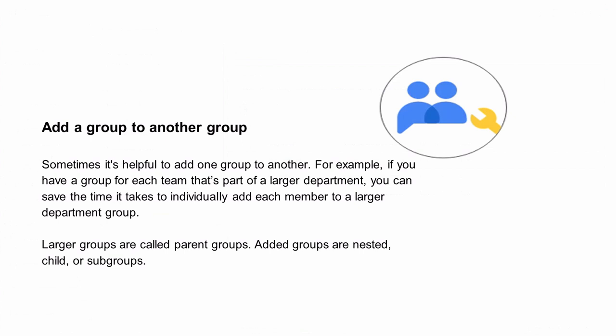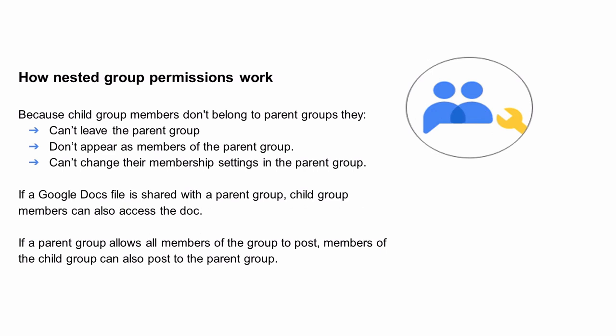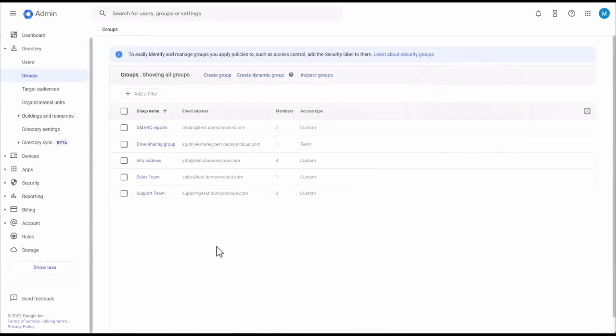Sometimes it's helpful to add one group to another. For example, if you have a group for each team that's part of a larger department, you can save the time it takes to individually add each member to a larger department group. Larger groups are called parent groups; added groups are nested, child, or subgroups. You might nest groups to have messages posted to the parent group also posted to the child, if the child's posting permissions allow it. You can also change members of the parent group by editing the child — this works if multiple parent groups contain the same child group. Because child group members don't belong to parent groups, they can't leave the parent group, don't appear as members of the parent group, and can't change their membership settings in the parent group. If a Google Docs file is shared with a parent group, child group members can also access the doc. If a parent group allows all members to post, members of the child group can also post to the parent group.